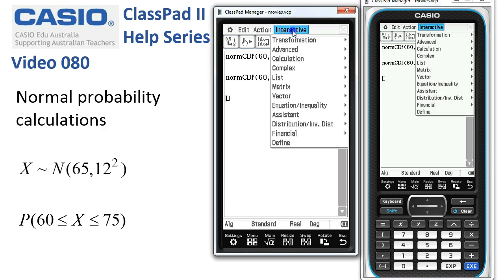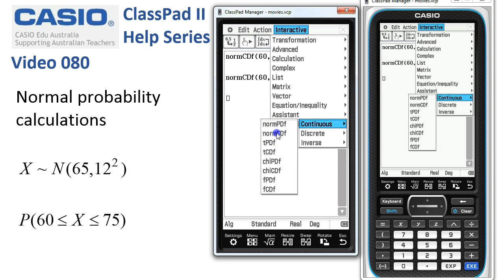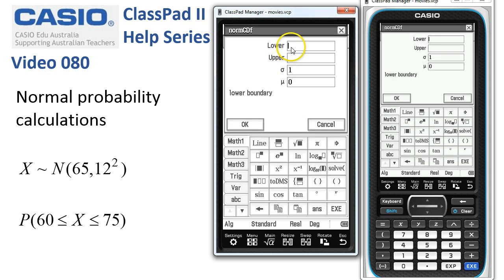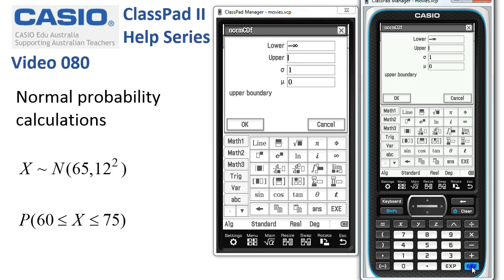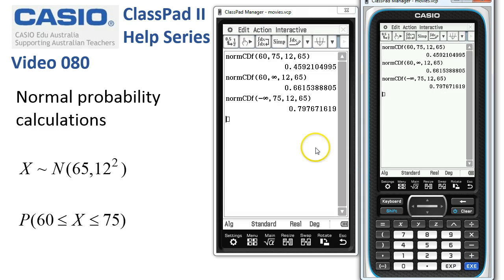And the same works if it's a left tail. So here we go for the last example. We've got a continuous norm CDF and this time the lower is negative infinity. So next is 75 for the upper. Tap execute. 12 for the standard deviation. Tap execute and 65. Execute execute and our probability is evaluated.